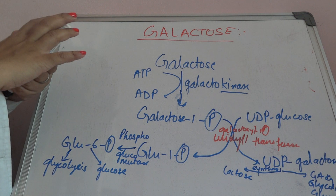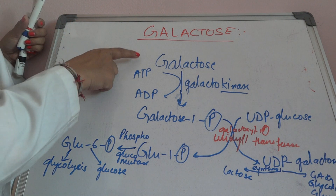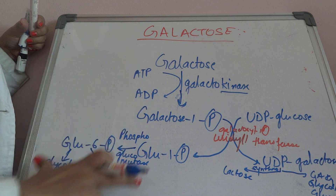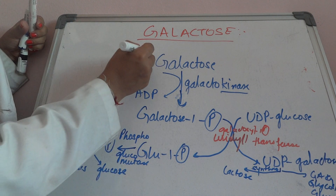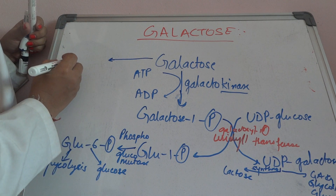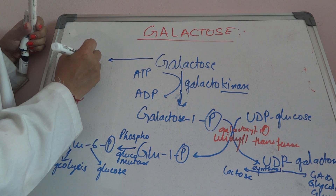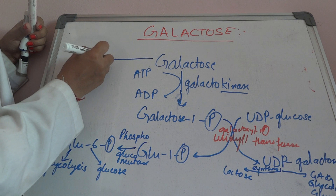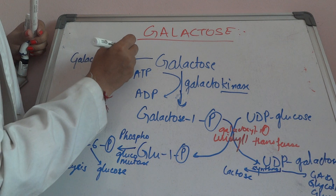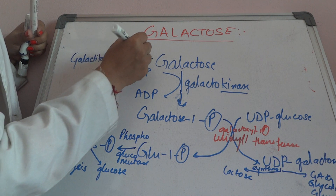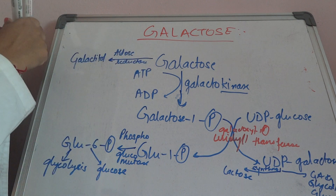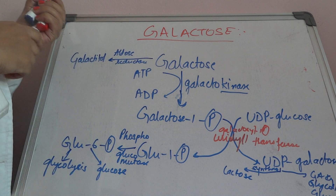This is the simple pathway of galactose metabolism. But there is also one more direction: galactose can form galactitol in the presence of the enzyme aldose reductase, which requires NADPH.